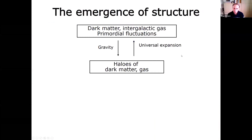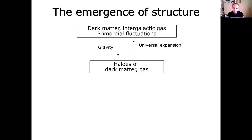Before saying more about the simulations, I want to make sure we're on the same page with the general picture of structure and galaxy formation. We start with small primordial fluctuations at high redshift that grow because gravity is always attractive — gravitational instability compresses material into a web of filaments. Collapsing in one dimension gives a sheet, two dimensions a filament, and three dimensions a dark matter halo. Gas on these scales basically traces the dark matter.